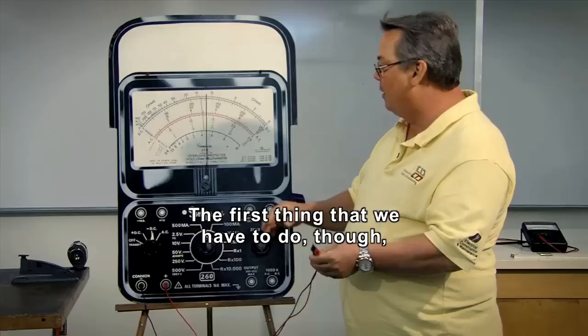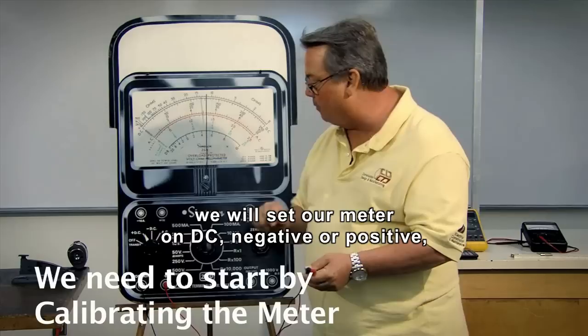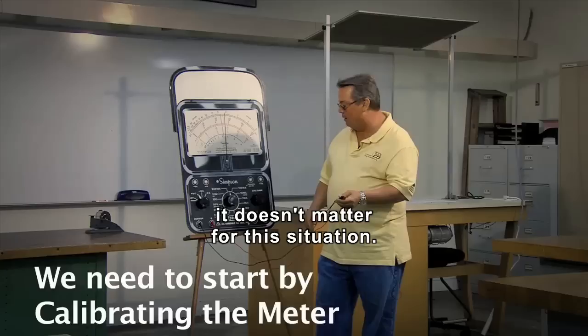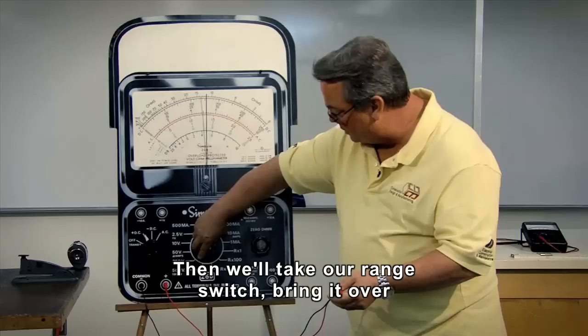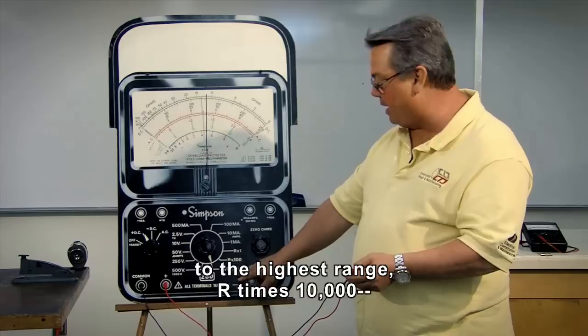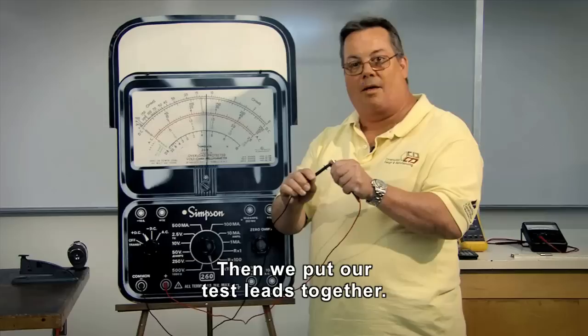The first thing we have to do though before we can read an ohmic value, we will set our meter on DC. Negative or positive, it doesn't matter for this situation. Then we'll take our range switch, bring it over to the highest range, R times 10,000, R being resistance. And then we put our test leads together.